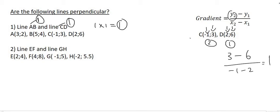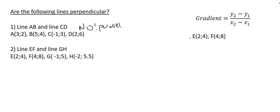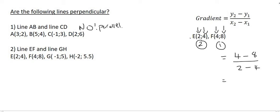Moving on to number 2, let's work out the gradient of EF. I'm going to call E point number 2 and F point number 1. Using the gradient formula: the y value of point 2 is 4, minus the y value of point 1 which is 8, over the x value of point 2 which is 2, minus the x value of point 1 which is 4. Working this out gives 2. So the gradient of EF is 2.